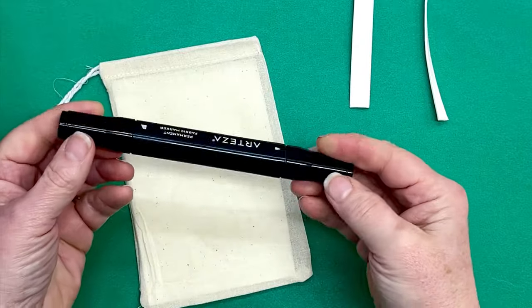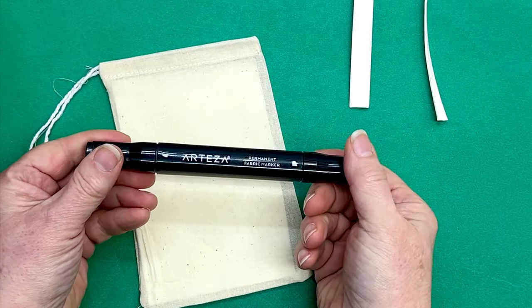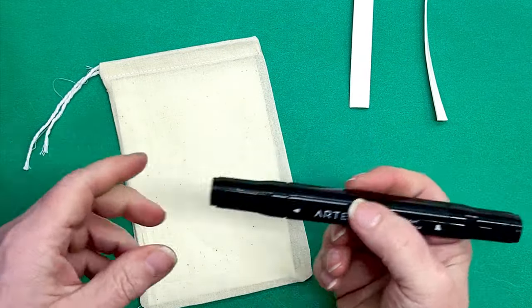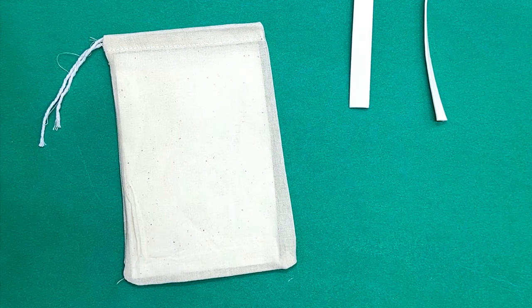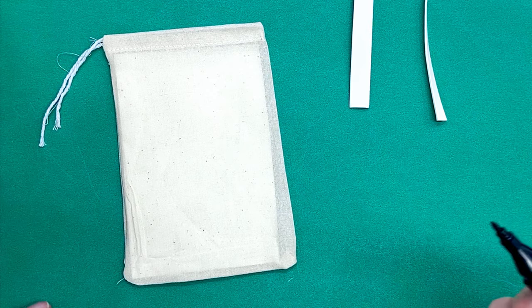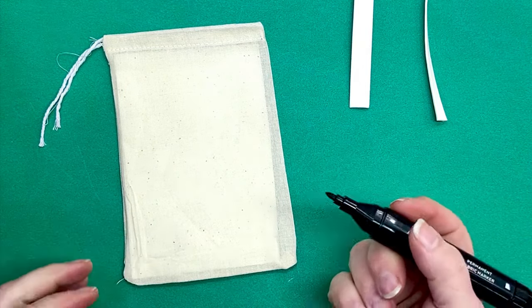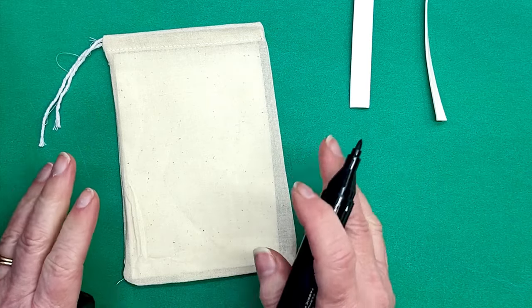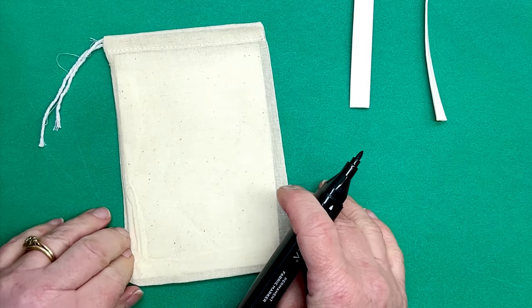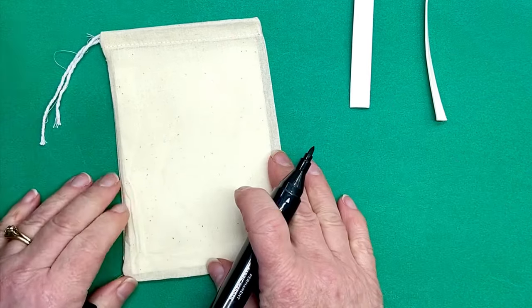I'm using an Arteza permanent fabric marker to draw my little chicken on here. This is just a doodle. We're not worried about making beautiful, perfect pieces of artwork. We're doing a fun little chicken feed bag. It would be so cute for a kid's birthday or for a wedding reception.